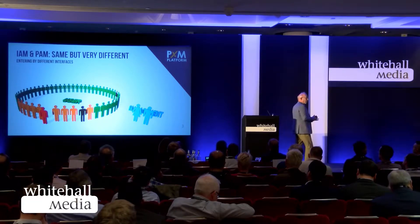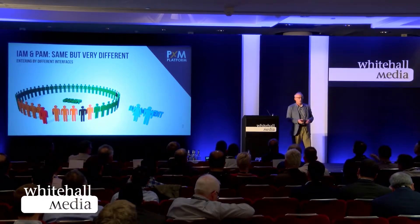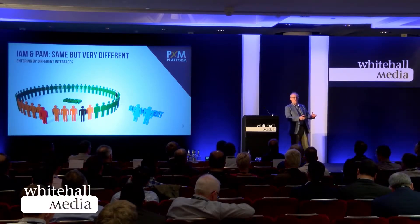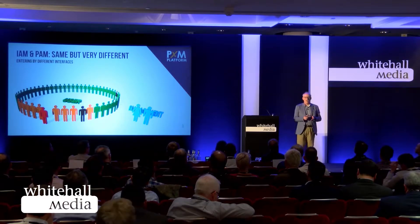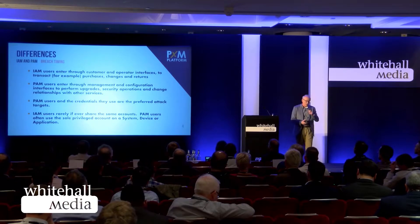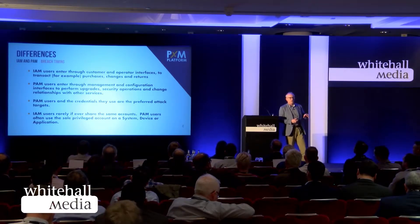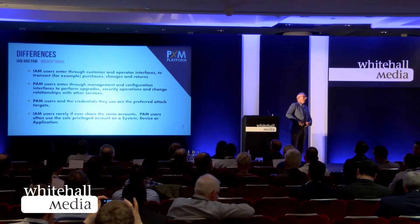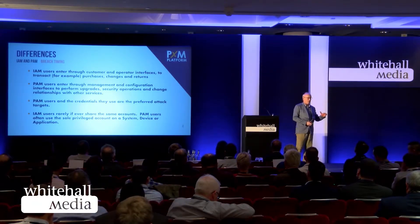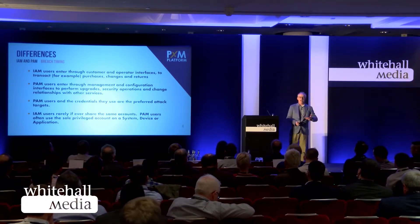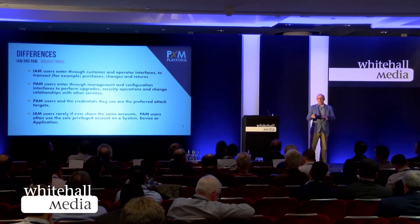IAM users are coming in on your normal user interface. If we think about an e-commerce company, users are either coming in as customers, order processors, or line managers. Whereas PAM users — privileged access managers — are going in at a completely different level: the management interface. What's important about those two different interfaces comes down to what happens in breaches. Data breaches, all except for one incident that I'm aware of, always go through privileged accounts — not normal user accounts. When you log into Amazon as a normal user, you can't breach Amazon.